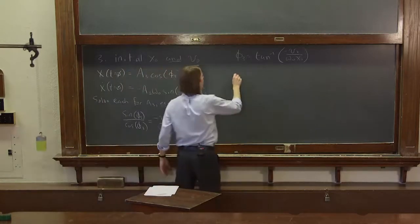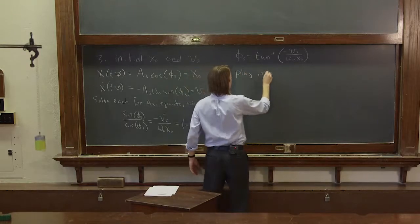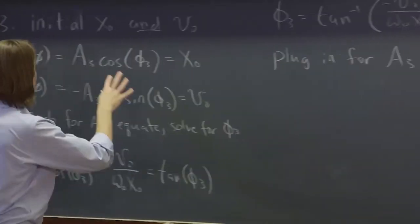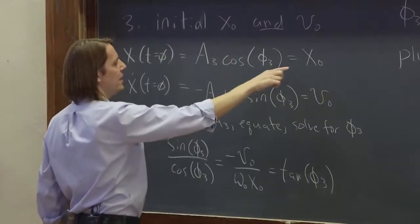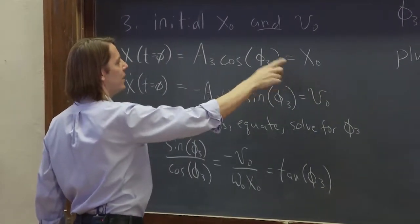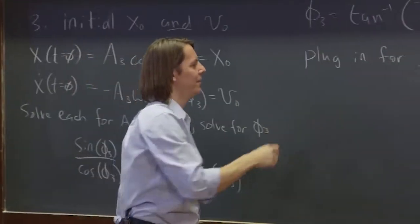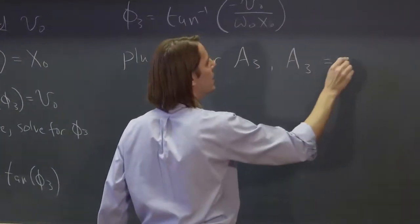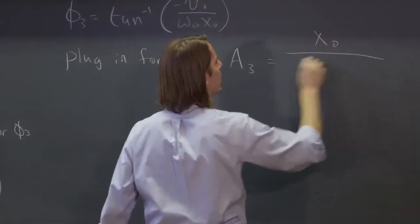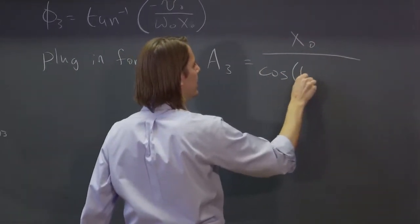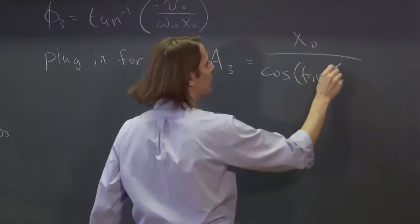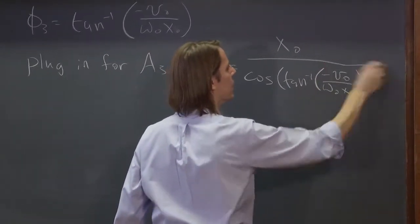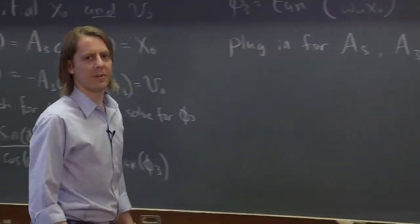Now, we've got to get a three. Well, you just plug in for a three. Basically, you don't get to simplify a three very much. You can come here and say a three is equal to x-naught over the cosine of that phase. So that looks kind of ugly.